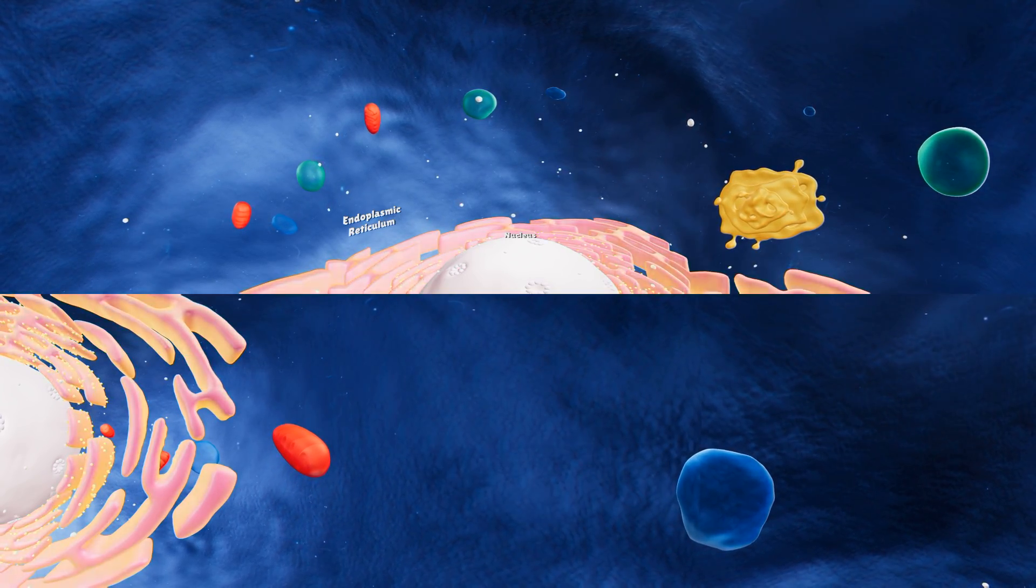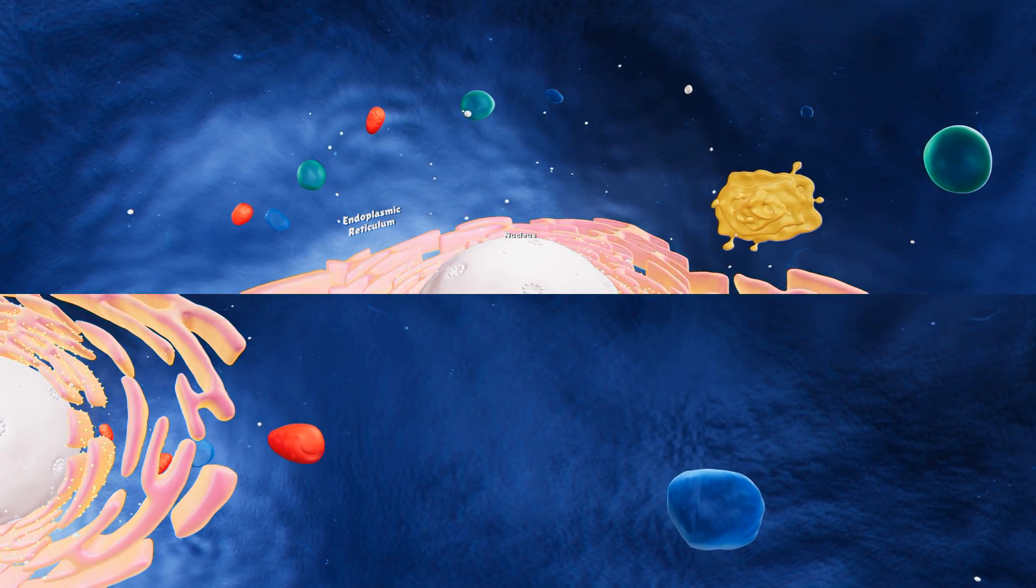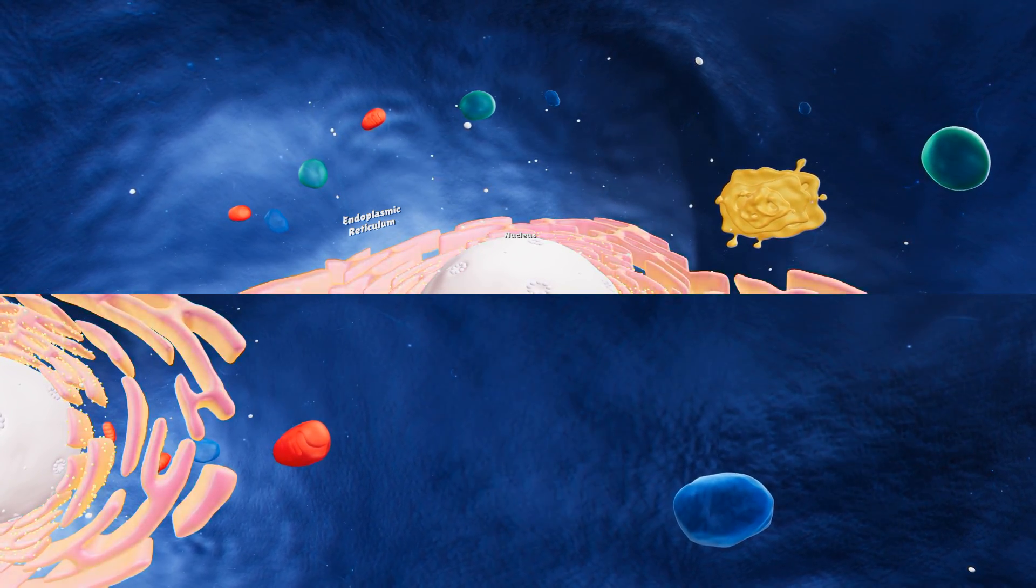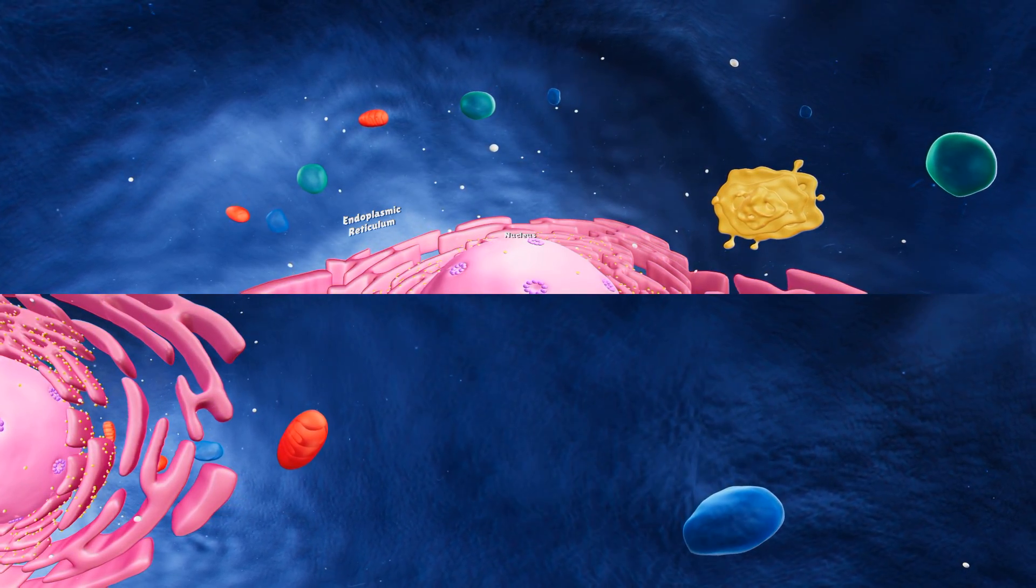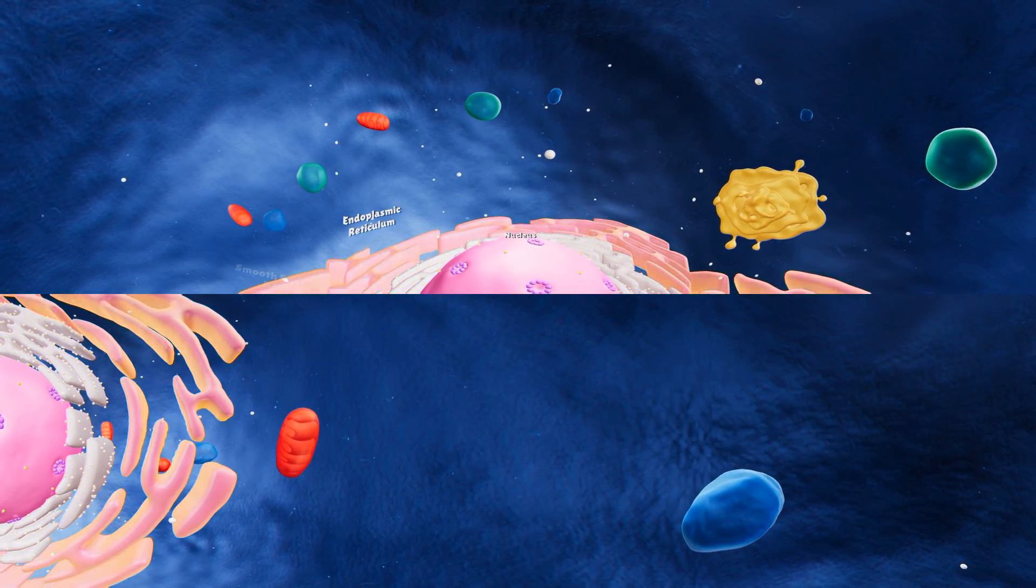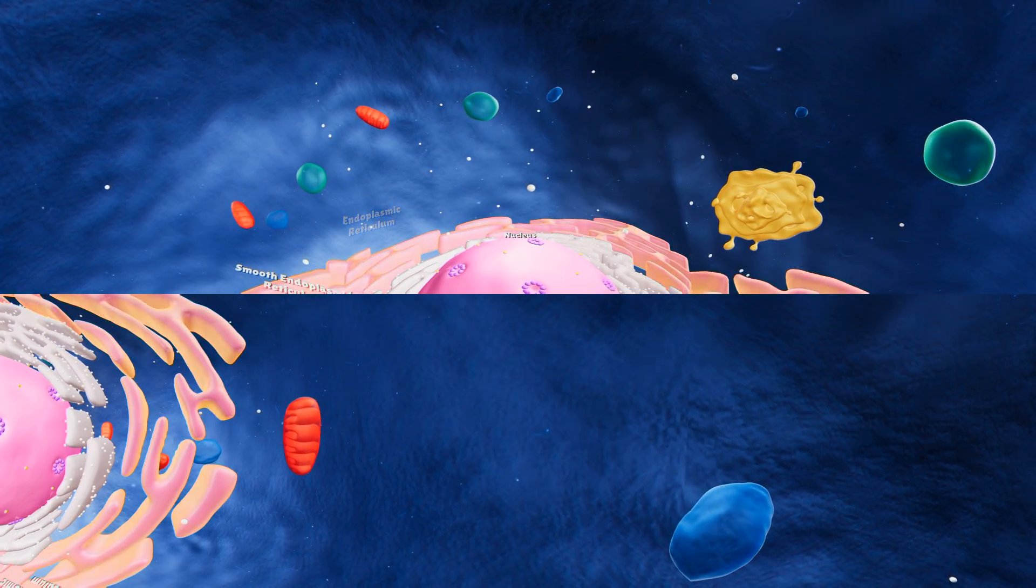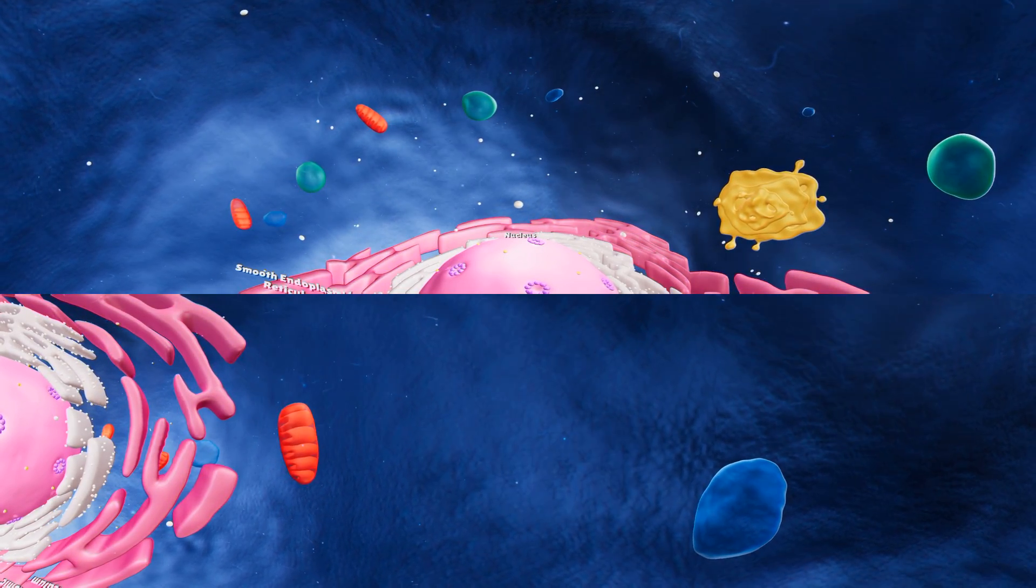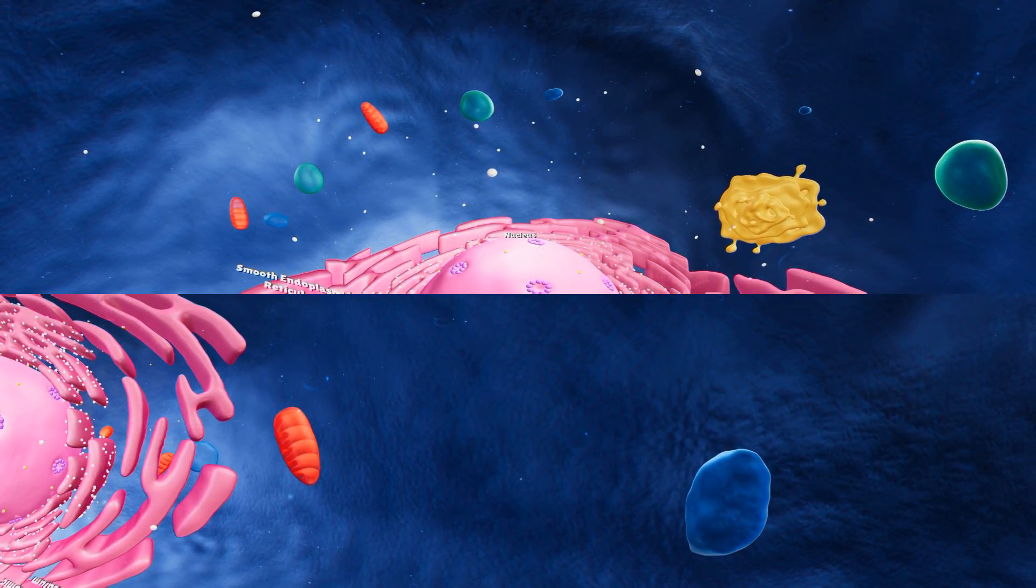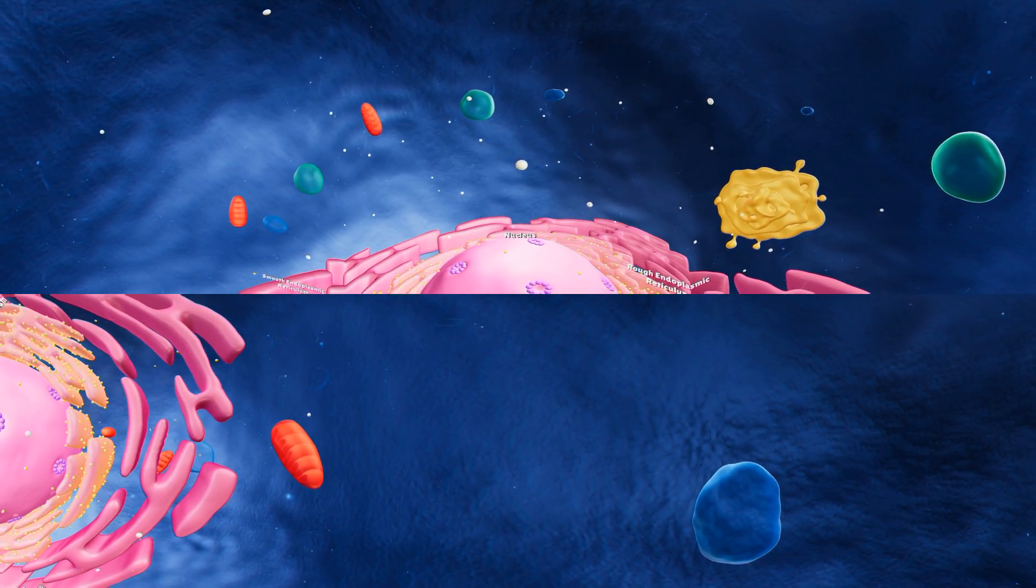There are two types of endoplasmic reticulums in a eukaryotic animal cell: the smooth endoplasmic reticulum and the rough endoplasmic reticulum.